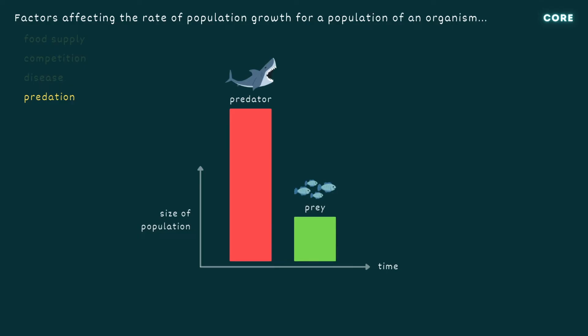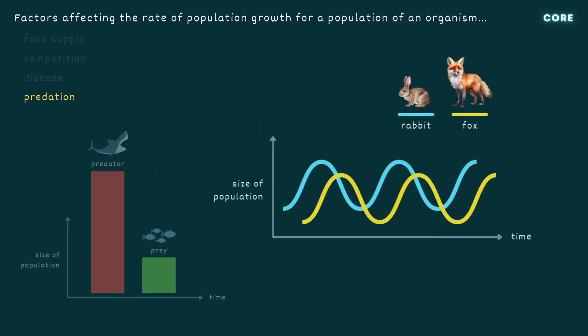You need to be able to interpret graphs or diagrams of population growth. The population size of a predator tends to lag behind that of its prey. In this example, as the rabbit population increases, foxes have more to eat and so, after a period of time, their population goes up as well.